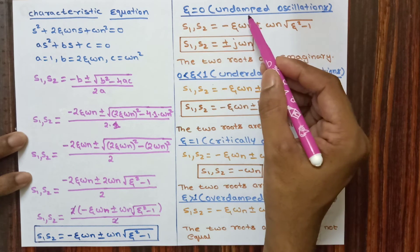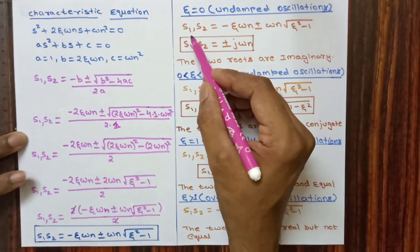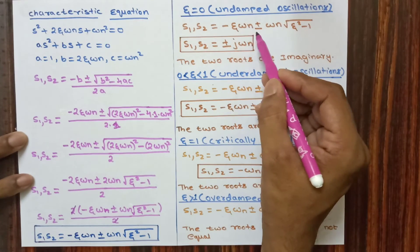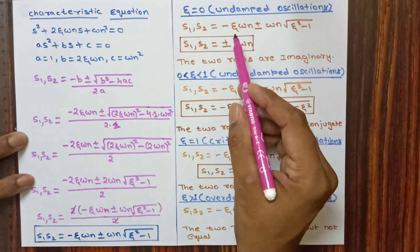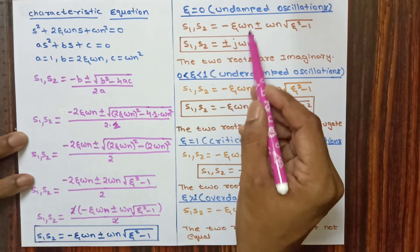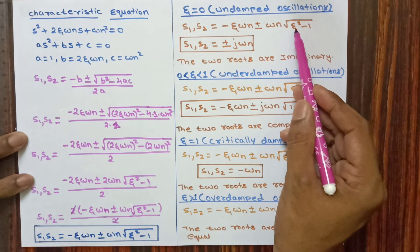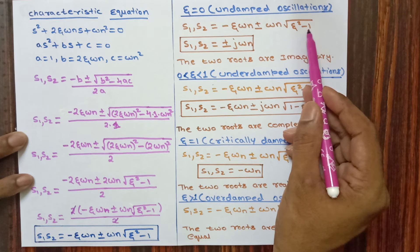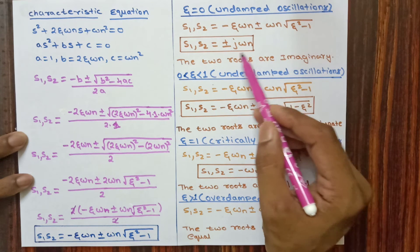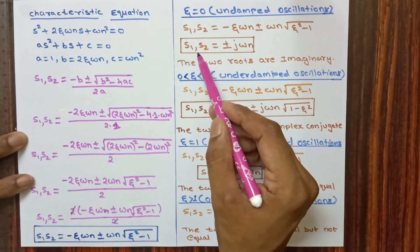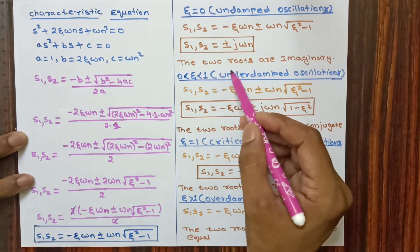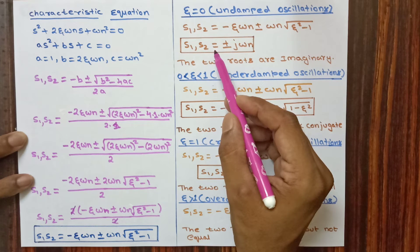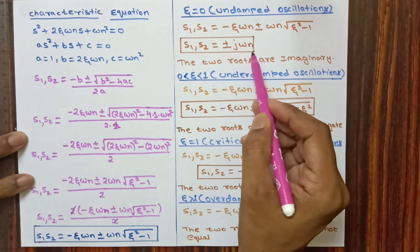Now substituting different zeta values to find the roots: for zeta=0 (undamped oscillations), substituting into s1, s2 = -zeta*omega_n ± omega_n * sqrt(zeta^2 - 1), the first term becomes 0 and sqrt(-1) = j. Therefore s1, s2 = ±j*omega_n. The two roots are purely imaginary — one root is +j*omega_n and the other is -j*omega_n.